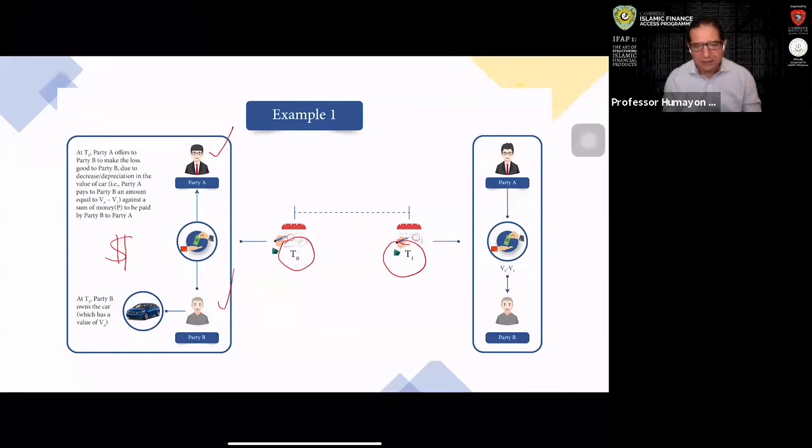And if the two parties agree on this, on the future date, party A actually gives V0 minus V1, which is the amount of depreciation in the asset, i.e. the car. So at T0, party B pays a certain amount of dollars to party A, so that on a future date T1, party A pays V0 minus V1 to party B.